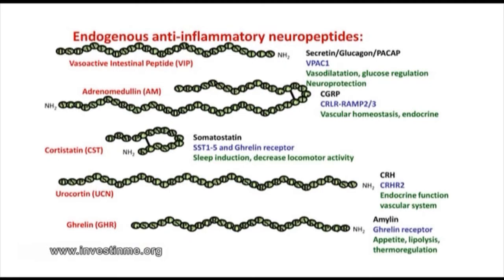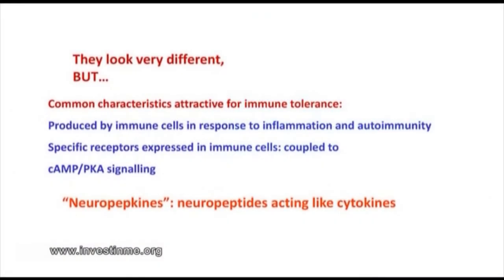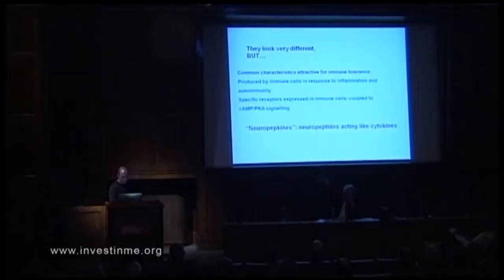These neuropeptides look different and act through different receptors, with different major roles in the body. But from an immunological point of view, they share common characteristics that are attractive for treating autoimmunity. They are produced by immune cells in response to inflammation and autoimmunity, immune cells express specific receptors for them, and most importantly, all these receptors are coupled to cAMP and PKA signaling — a pathway related to anti-inflammation and immunosuppression. I would like to call these molecules 'neuropeptokines' — neuropeptides acting like cytokines.